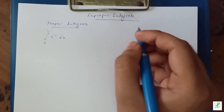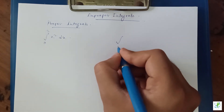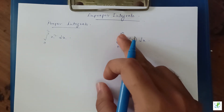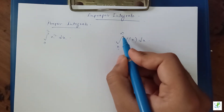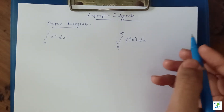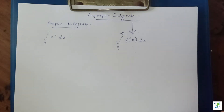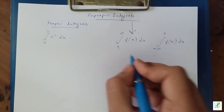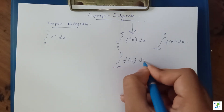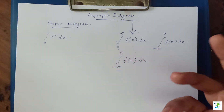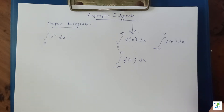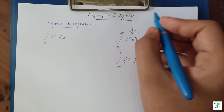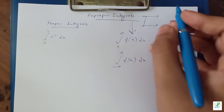On the other hand, consider this: integration from zero to infinity of f(x) dx. In this integral you can clearly see that the lower limit is bounded whereas the upper limit is not bounded — it is going towards infinity. This kind of integral is called an improper integral. It can also be from minus infinity to zero of f(x) dx, or from minus infinity to plus infinity of f(x) dx. Where any limit is towards infinity — upper, lower, or both — the integral is said to be improper.